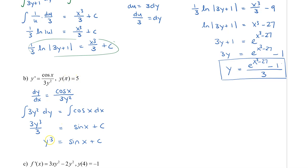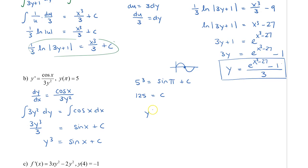Now plug in pi for x and 5 for y. 5 cubed is 125, and sin pi equals 0 — as you can recall from the graph of sin. So c equals 125. Therefore y cubed equals sin x plus 125, and y equals the cube root of sin x plus 125.